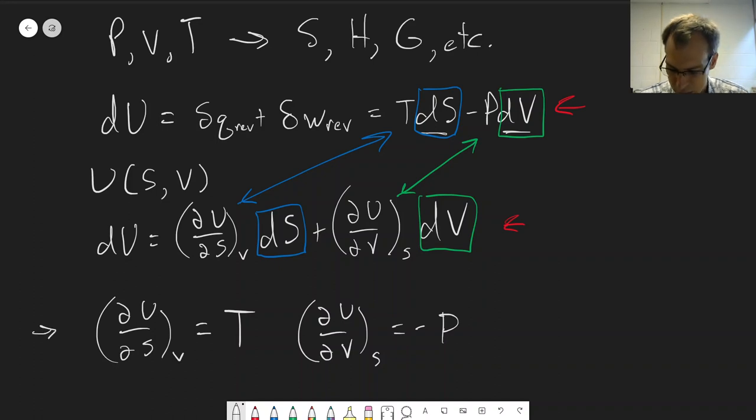So these relationships here, these are not Maxwell relations, the Maxwell relation comes from using the cross derivatives. So you may remember when we talked about partial derivatives, that cross derivatives - if we take, say for example here, (∂U/∂S)_V,